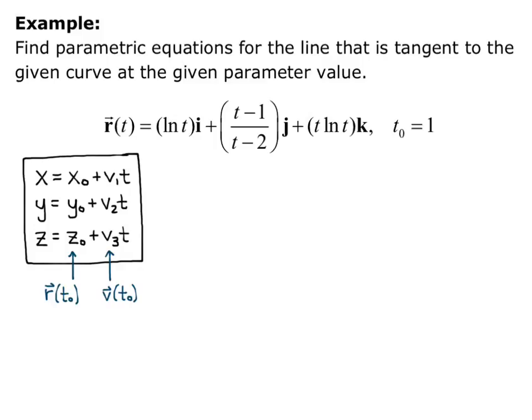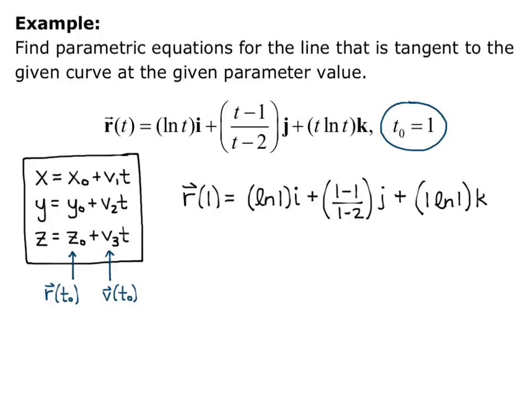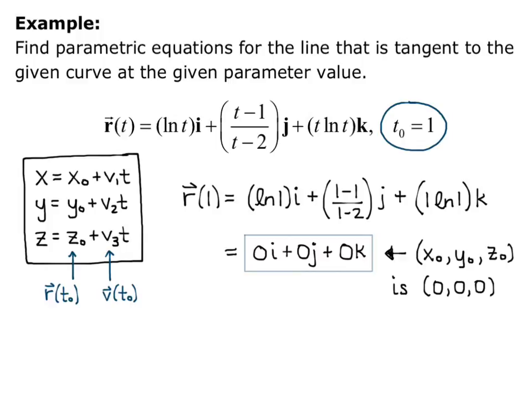So let's start by just plugging in our t₀ equals 1 into r. So r of 1 equals natural log of 1 times i plus 1 minus 1 over 1 minus 2 times j plus 1 times natural log of 1 k. So I plugged a 1 into my equation. So this equals 0i plus 0j plus 0k. Everything zeroes out because the natural log of 1 is 0, and 1 minus 1 is 0. So that's my x₀, y₀, and z₀ for the equation, 0, 0, 0.